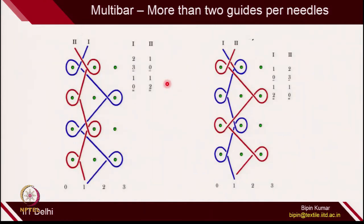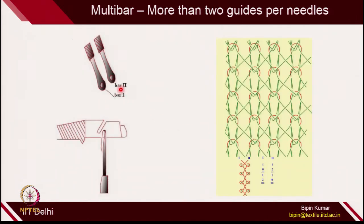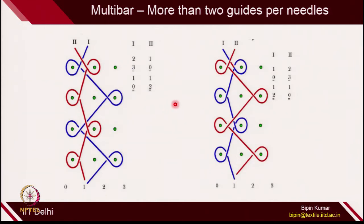Even though the lapping plan of these 2 bars is the same, the relative positioning with respect to the needle also plays an important role. When you change the position of bar 1 and bar 2, the fabric will change.